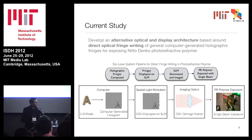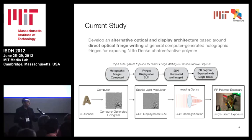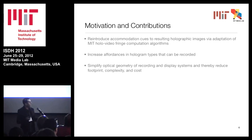This brings me back to the current study. The work here is really to develop an alternative optical and display architecture based around direct optical fringe writing for any general computer-generated holographic fringe pattern for exposing this Nidodenko material. The scheme is simple: we take data from a 3D model or a range-finding camera, generate a computer-generated hologram algorithmically, display it on an SLM, demagnify it using demagnifying optics, and expose a photorefracted polymer with a single beam. The motivation is to reintroduce accommodation cues and increase affordances in the type of hologram that can be recorded, and to simplify the optical geometry, reducing footprint, complexity, and cost.